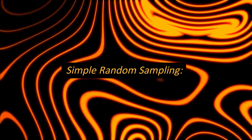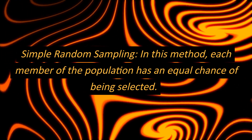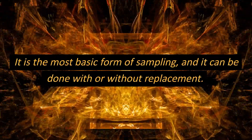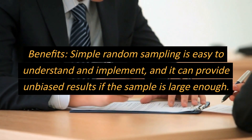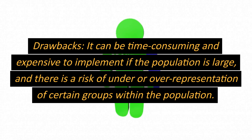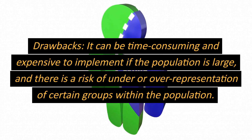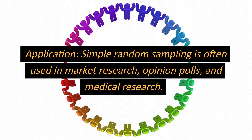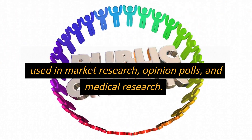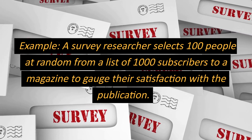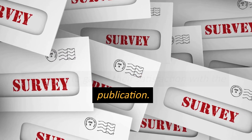Simple random sampling. In this method, each member of the population has an equal chance of being selected. It is the most basic form of sampling, and it can be done with or without replacement. Benefits: simple random sampling is easy to understand and implement, and it can provide unbiased results if the sample is large enough. Drawbacks: it can be time-consuming and expensive to implement if the population is large, and there is a risk of under- or over-representation of certain groups. Application: it is often used in market research, opinion polls, and medical research. Example: a survey researcher selects 100 people at random from a list of 1,000 subscribers to a magazine to gauge their satisfaction with the publication.